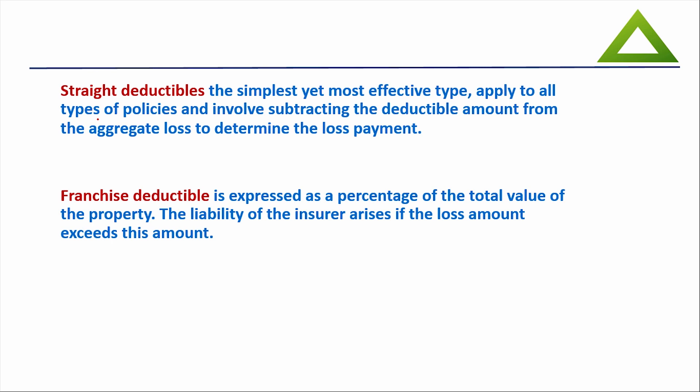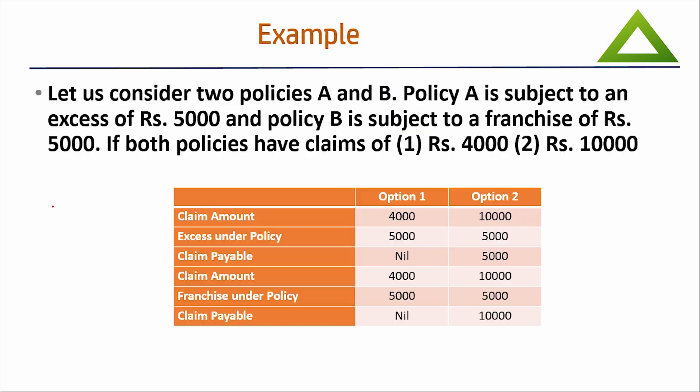Another type is franchise deductible, which is expressed as a percentage of total value of the property. The liability of the insurer arises only if the loss amount exceeds this amount. Why do insurance companies keep all these provisions? They want you to come to them only if there is a major loss. For smaller losses, it should simply be on the insured — on you. So that is the reason they assure to pay you bigger losses, and smaller losses are to be borne by you. To ensure that concept, they keep different types of deductibles.